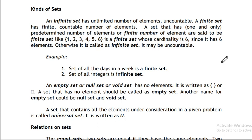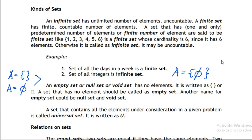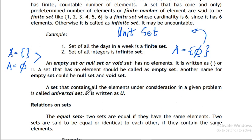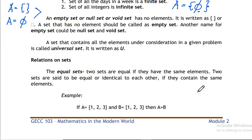We also have the empty set, null set, or void set, which has no elements. It is written as A = {} or A = Ø, but not as {Ø}, as that would mean it already contains one element. A set with exactly one element is called a unit set. The universal set, denoted U, represents the totality — like the universe of all elements under consideration.